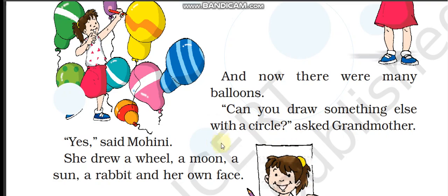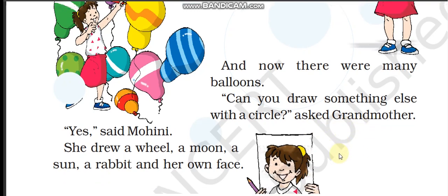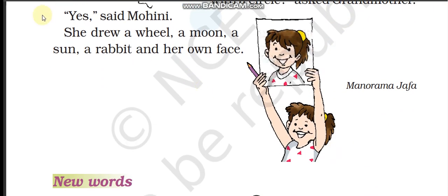Can you draw something else with a circle? Kya tum ek gole se kuchh aur bhi bana sakti ho? Asked Grandmother. Dadi maa ne poocha. Yes, said Mohini. Mohini ne kaha. She drew a wheel - usne ek pahiya banaya. And a sun - aur ek suraj banaya. A rabbit - ek khargosh banaya. And her own face - apna chehra banaya.